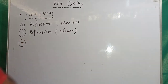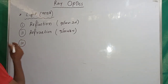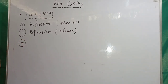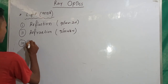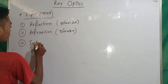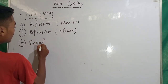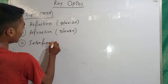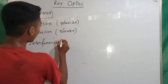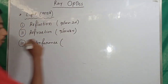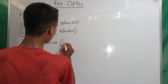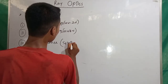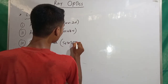The third point is interference. Interference — what is it? It is superposition (Homarupon).